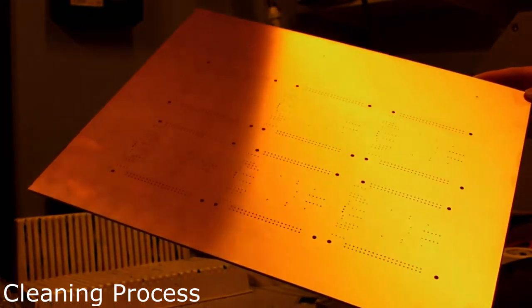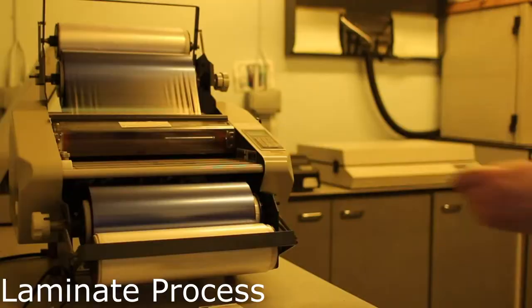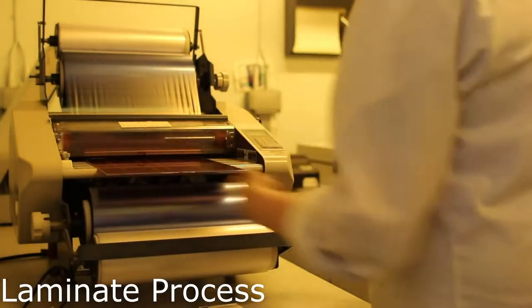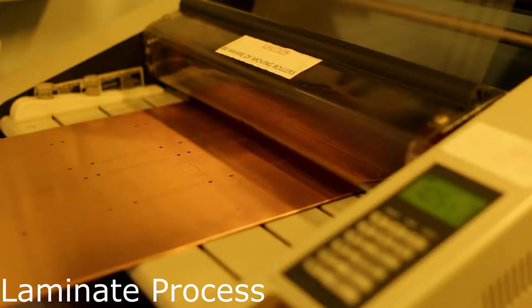It's then visually inspected to make sure the plating process was a success. The plated board now has photoresist film applied in a laminating machine.